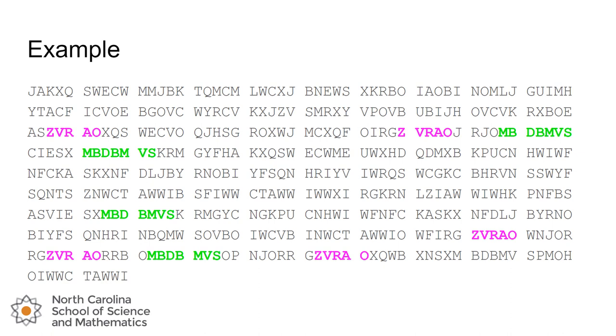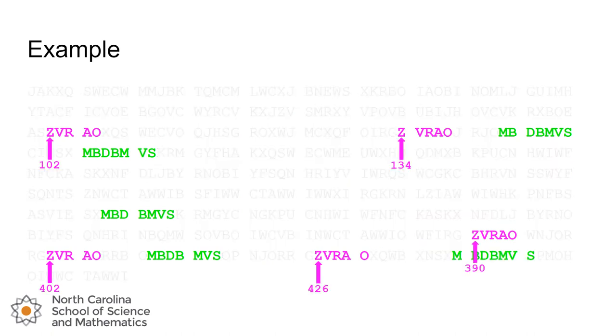So let's see how this plays out here. Let's go back to our example. We're going to look at first at the fragment zvrao and we're going to look at the index in our string or basically the position in the ciphertext that the repetitions start at. So the first one's at index 102 and then 134 and then 390, 402, and 426. With the green ones here, the mbdbmvs, they're at 143, 155, 307, 411, and 439.